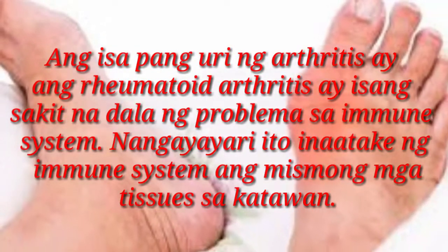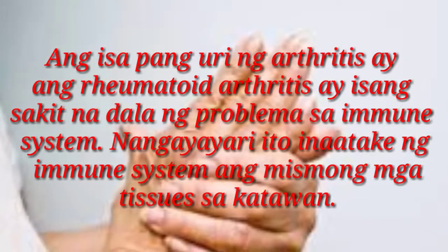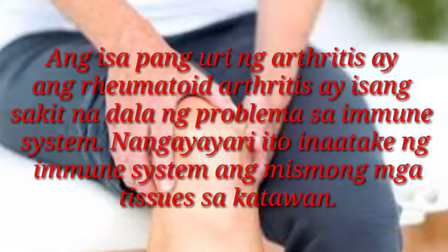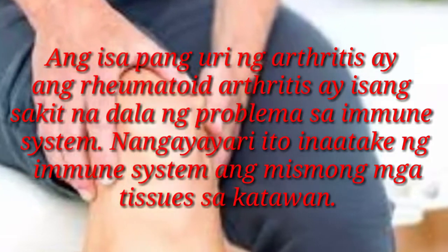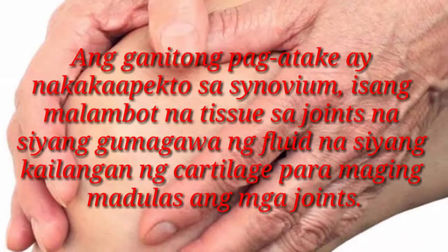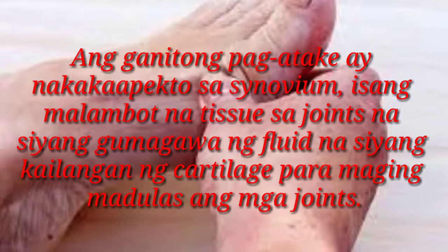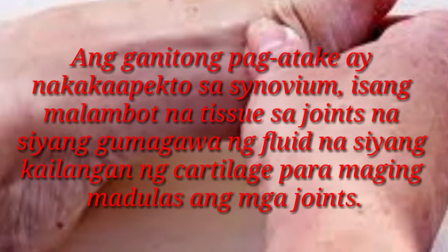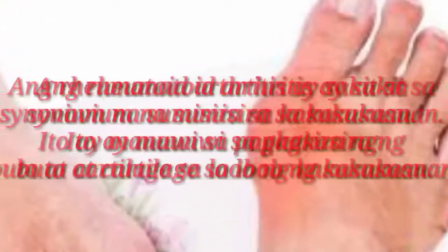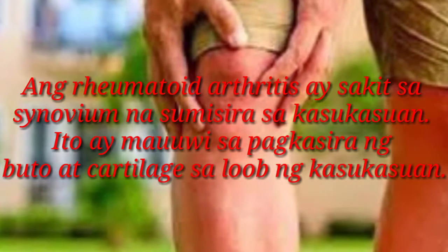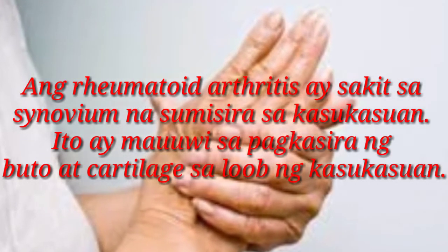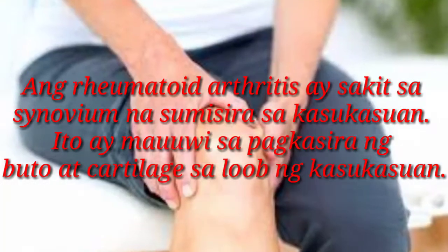Ang isa pang uri ng arthritis ay ang rheumatoid arthritis, isang sakit na dala ng problema sa immune system. Nangyayari ito dahil inaatakin ng immune system ang mismo mga tissues sa katawan. Ang ganitong pag-atake ay nakakapekto sa synovium, isang malambot na tissue sa joints na siyang gumagawa ng fluid na kailangan ng cartilage para maging madulas ang mga joints. Ang rheumatoid arthritis ay sakit sa synovium na sumisira sa kasukasuan at mauuwi sa pagkasira ng buto at cartilage sa loob ng kasukasuan.